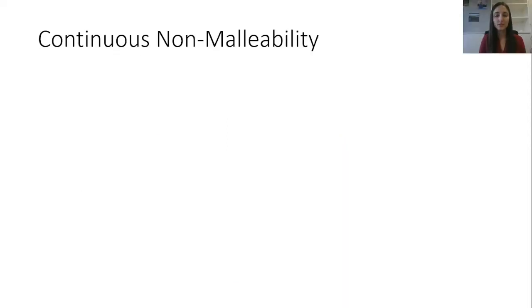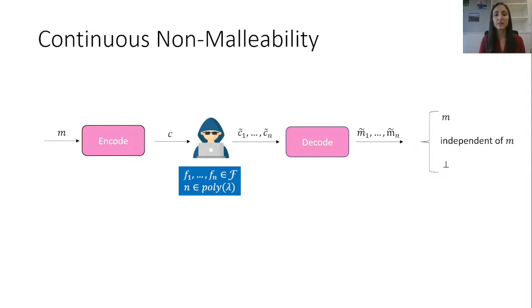A natural generalization of non-malleable codes is given by continuous non-malleable codes. In this case, the attacker is allowed to specify a polynomial number of tampering functions and observe the resulting messages.